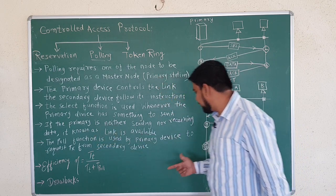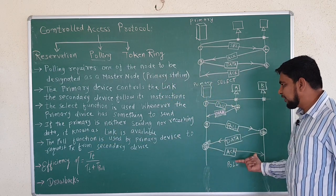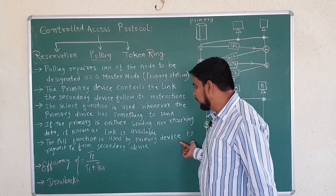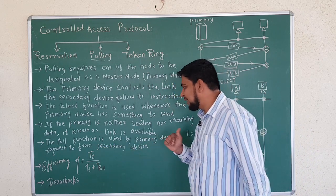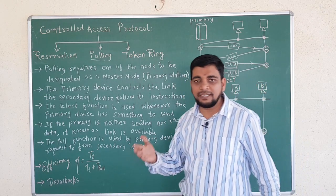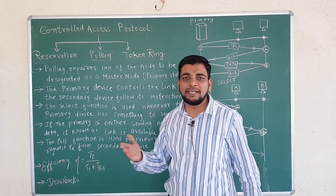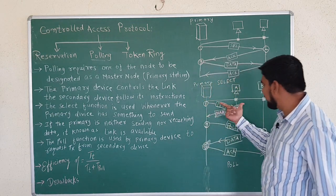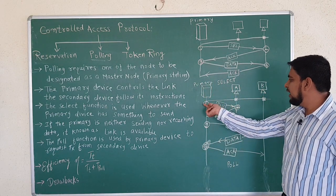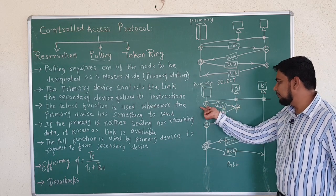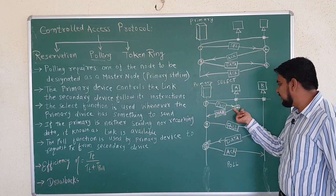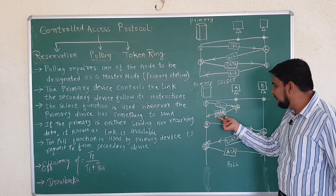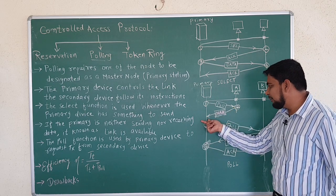The second function is the poll function. The poll function is used by the primary device to request transmission from the secondary device. If the primary needs to ask a secondary device to transmit, the poll function is used. The primary polls node A; if that node has nothing to send, it gives a negative acknowledgement to the primary node.